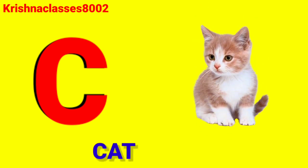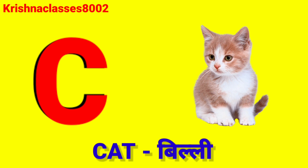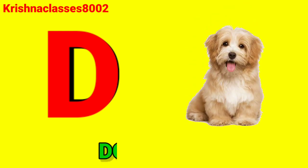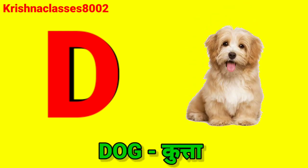C for cat. Cat means billy. D for dog. Dog means cuta.